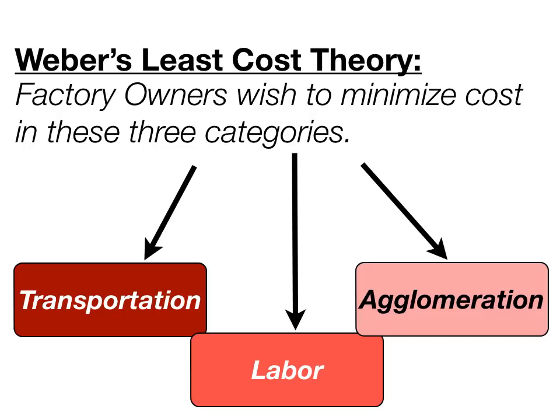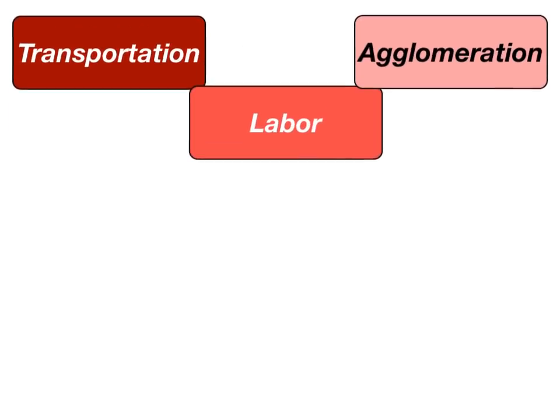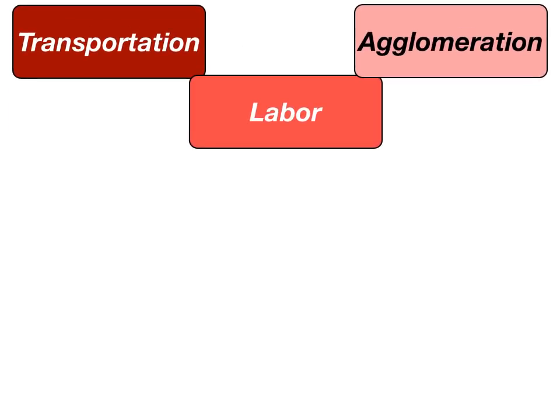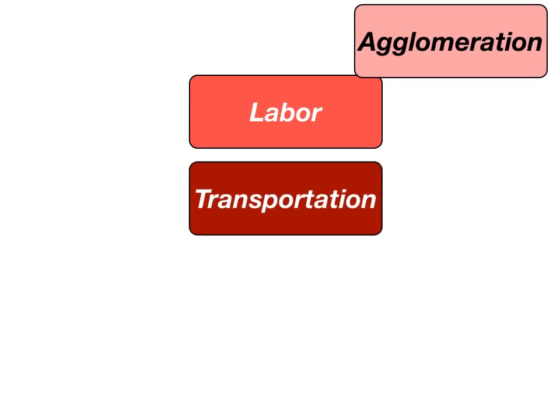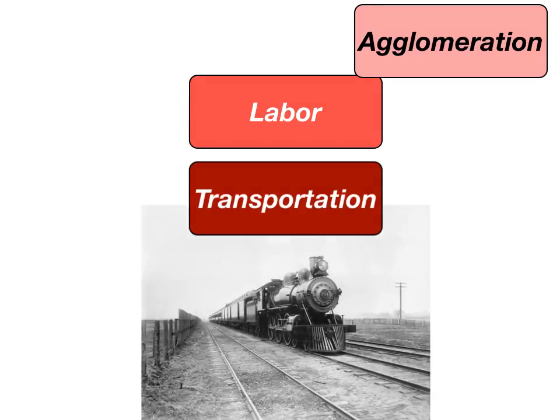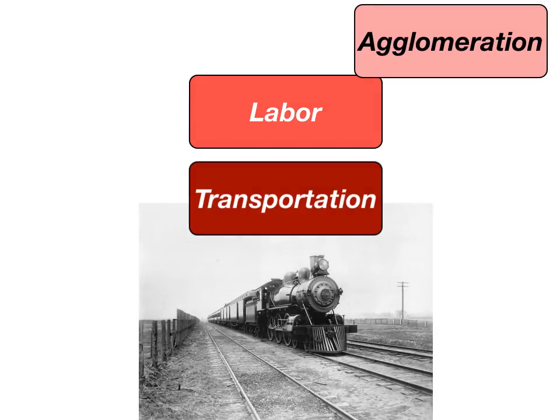Let's look at all three categories. In Weber's time, transportation was primarily in the form of trains. Later on, cars and trucks became more of a factor, but when he was writing this theory, trains were very, very important.